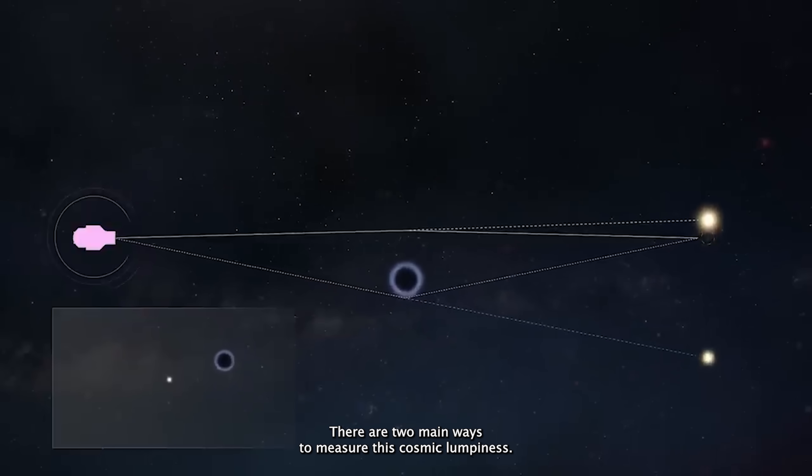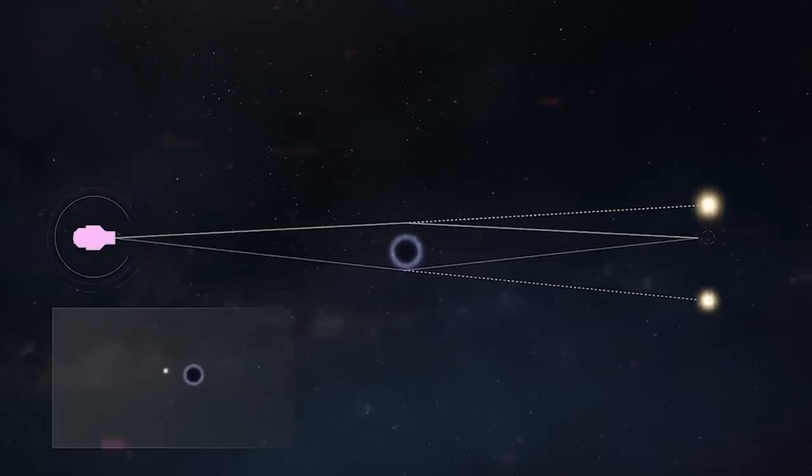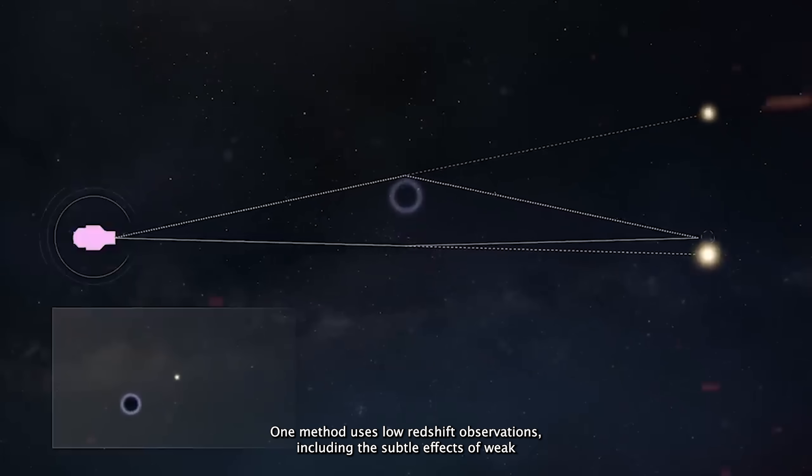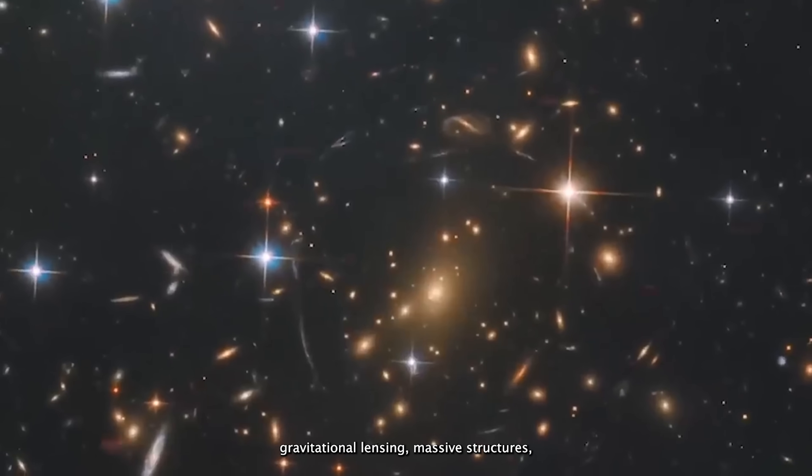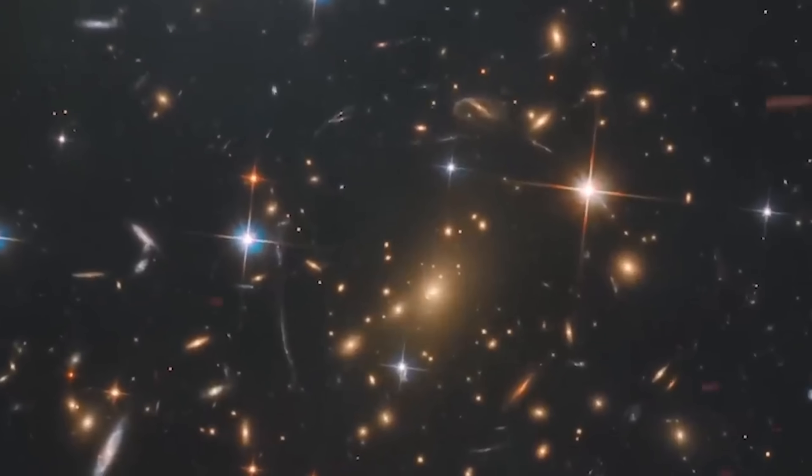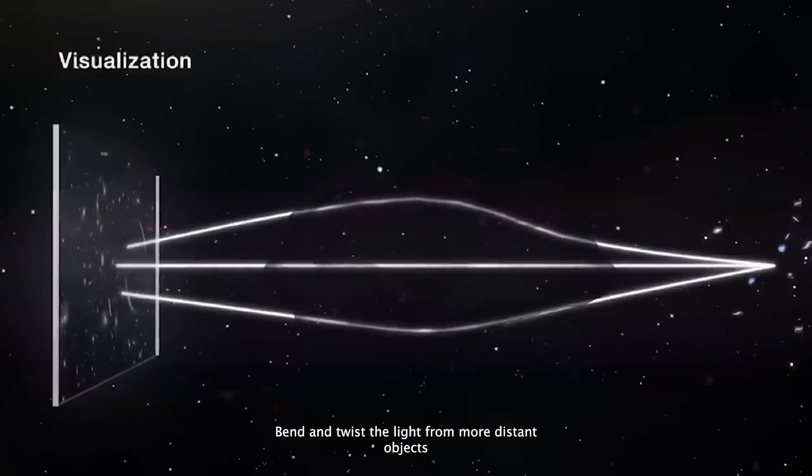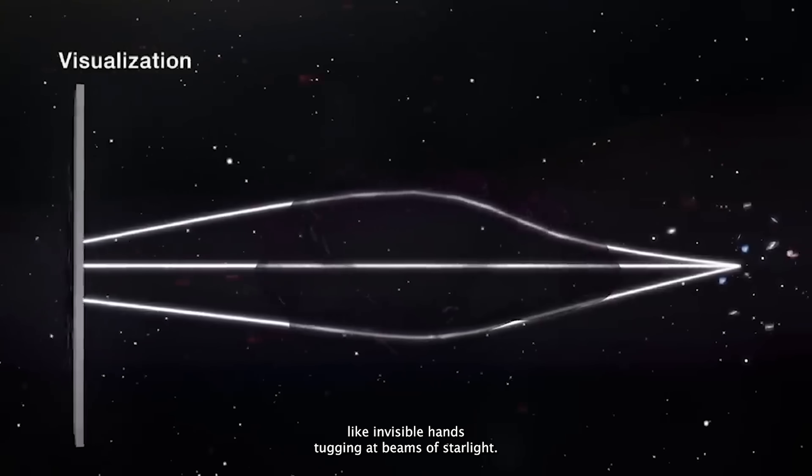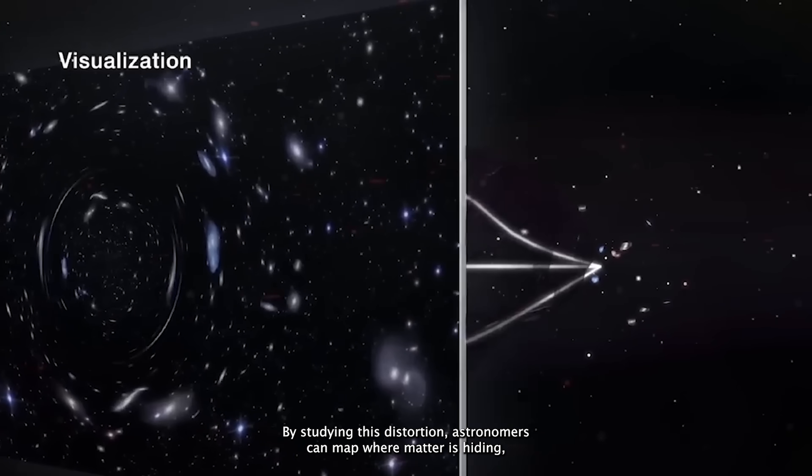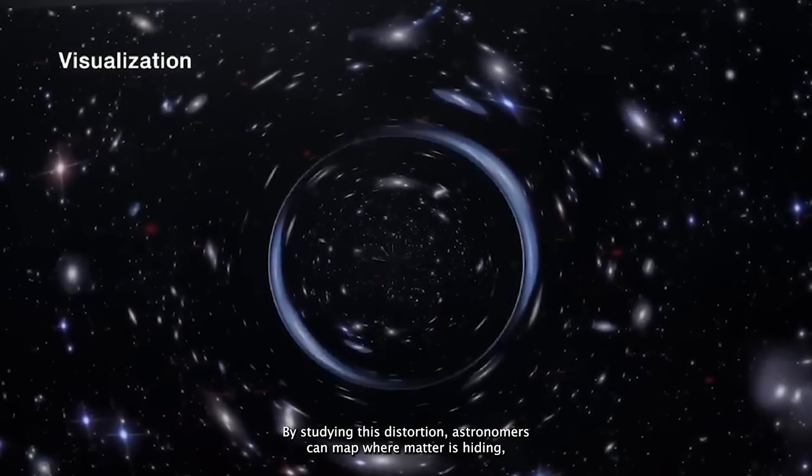There are two main ways to measure this cosmic clumpiness. One method uses low redshift observations, including the subtle effects of weak gravitational lensing. Massive structures, black holes, galaxies, clusters, bend and twist the light from more distant objects, like invisible hands tugging at beams of starlight. By studying this distortion, astronomers can map where matter is hiding, even when it's too faint to see directly.